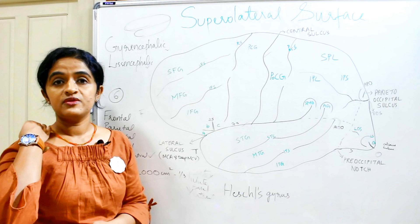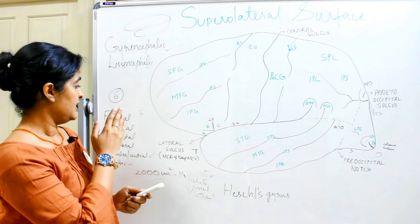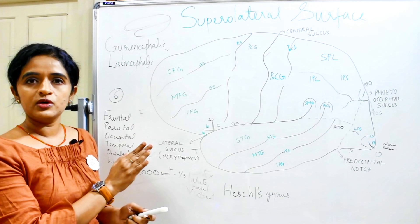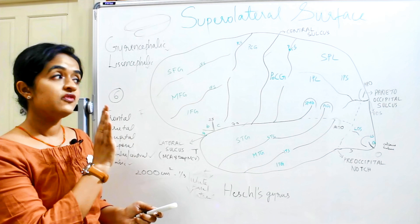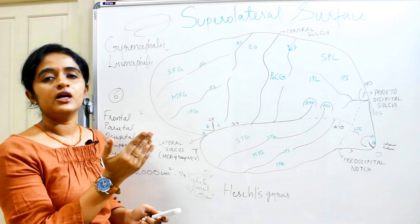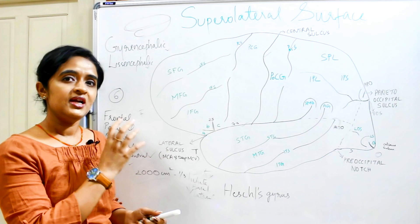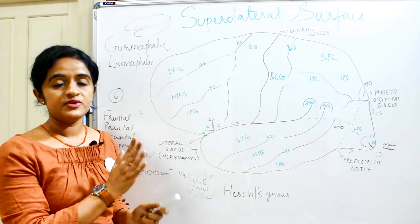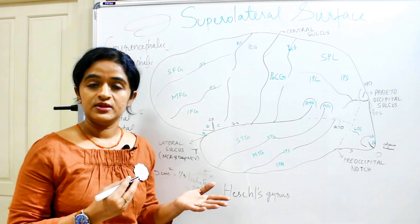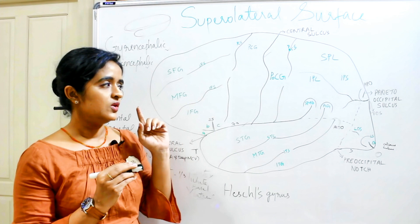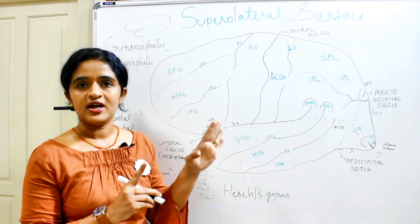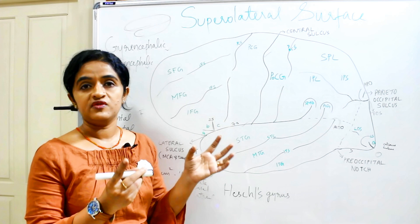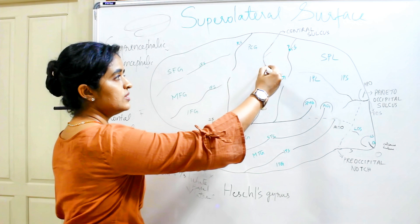Moving on to dividing the cerebral hemisphere into lobes: we have six lobes — frontal, parietal, occipital, temporal, insular (central) lobe, and limbic lobe. Five lobes can be identified from the superolateral surface, while the limbic lobe is identified from the medial surface. The division of lobes is based on the important sulci found on the superolateral surface. The first and foremost is the central sulcus.